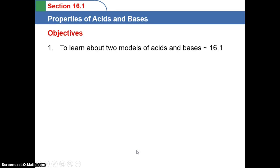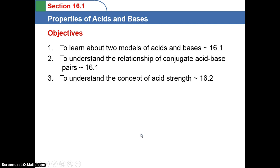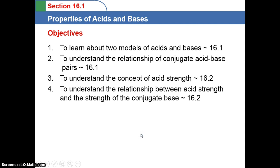So far in Chapter 16, we've looked at the two different models of acids and bases. We talked about the relationship of the conjugate acid-base pair. We understand the concept of what a strong acid means and the relationship between the strength of the acid and the strength of the conjugate base.